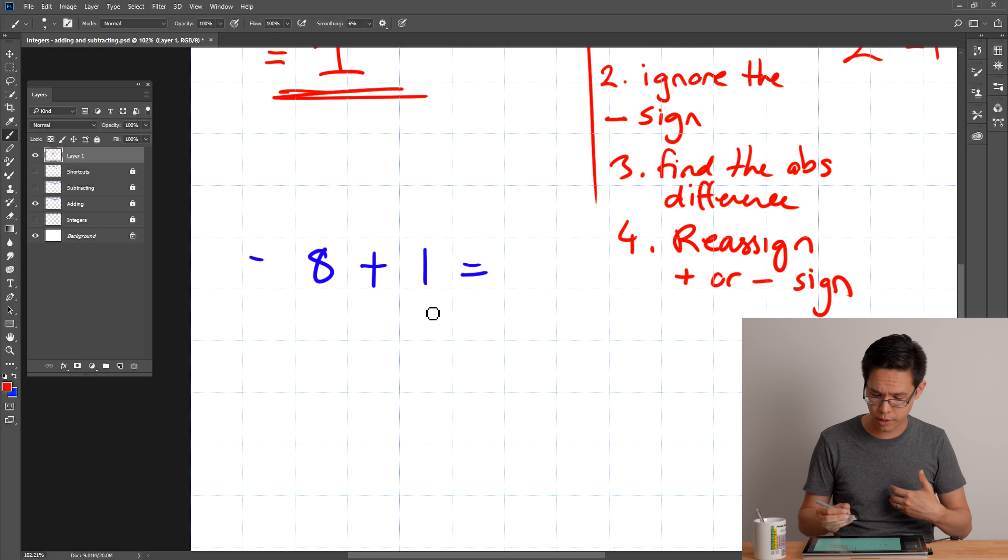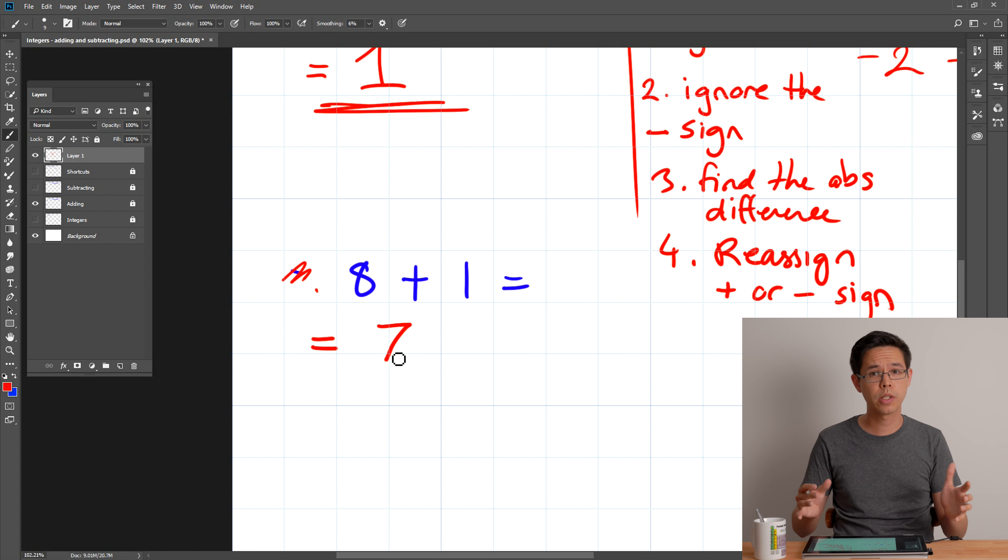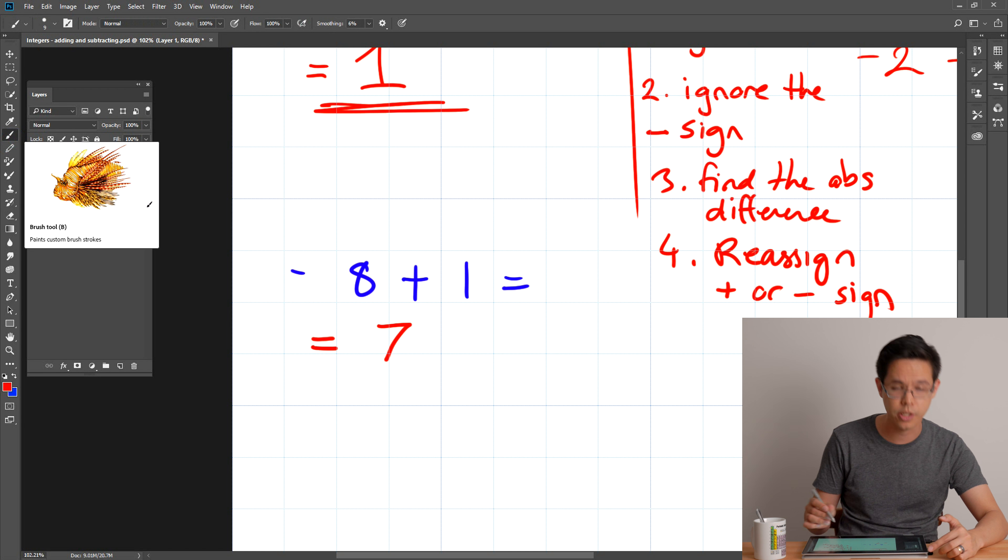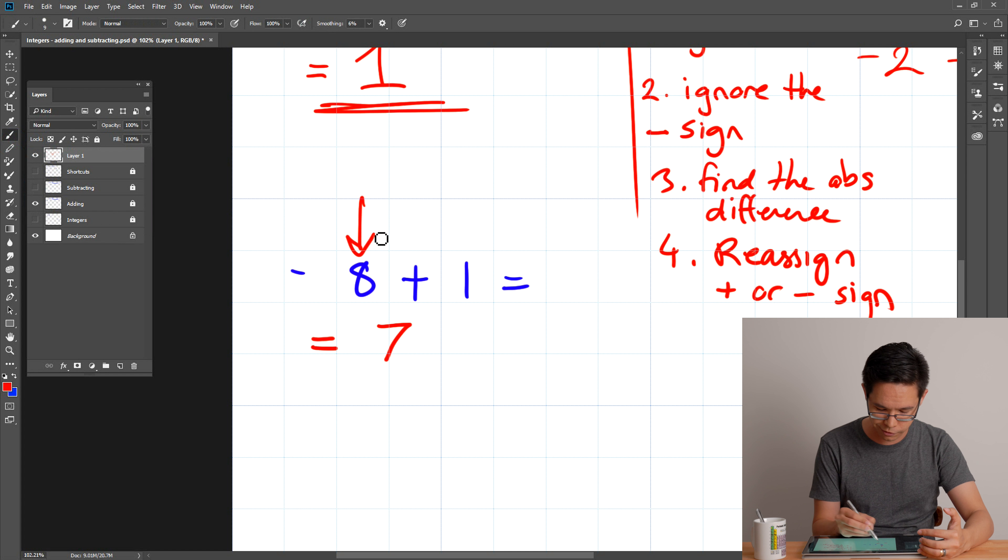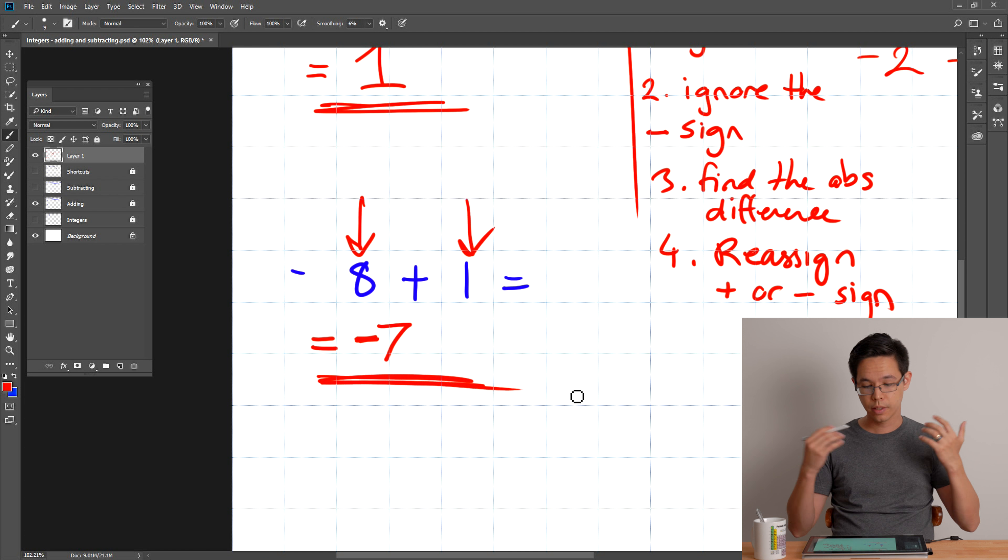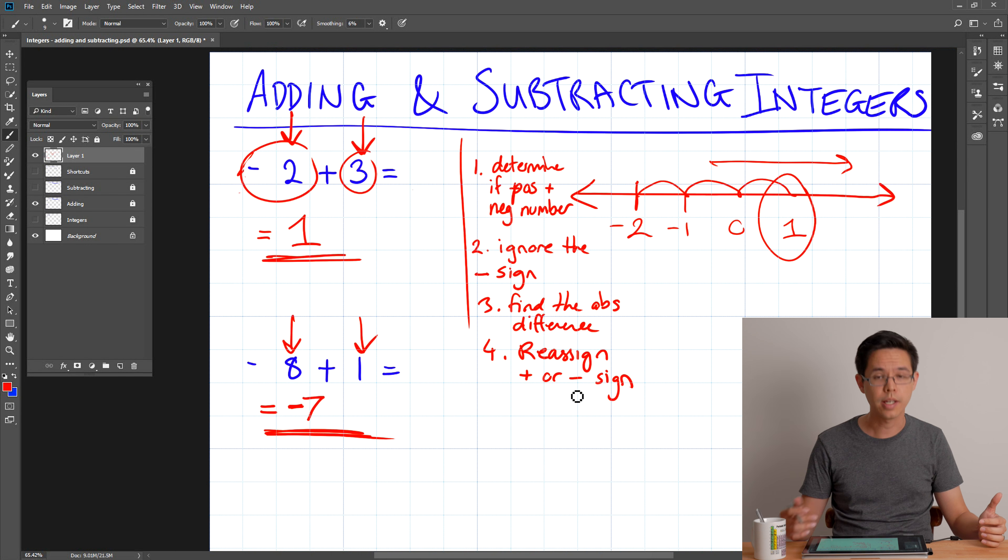So here I got negative eight plus one. If I apply the process I was just telling you about before, first is to determine, do I have a negative number added to a positive number? Yes, I do. So this trick will work. Then I throw away the signs. So I ignore this for now. And then I look for the absolute difference between my two numbers here. So what's the difference between eight and one? Well, there's a seven difference there. Then we go ahead and reassign the plus or minus sign. If I reveal the negative sign from the original problem again, which is larger, the negative part of the problem or the positive part of the problem? Well, it's much more negative. So the negative is actually going to overpower and win the day. So my final answer is negative seven.